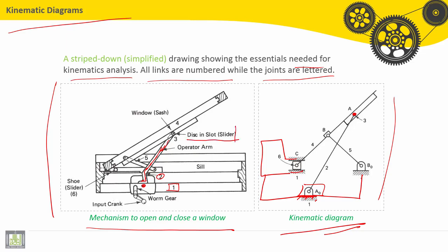Part number three has a cylinder joint with part number four. This is part number four. Part number five, this is part number five.